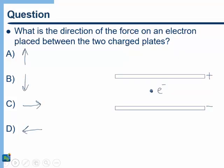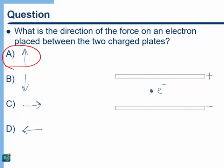What's the direction of the force on an electron placed between two charged plates? The answer is up. A negative charge is attracted to positive and repelled from negative, so the force is upward. Alternatively, the electric field in this region points downward, and since the force on a negative charge is opposite to the field direction, the force is upward.